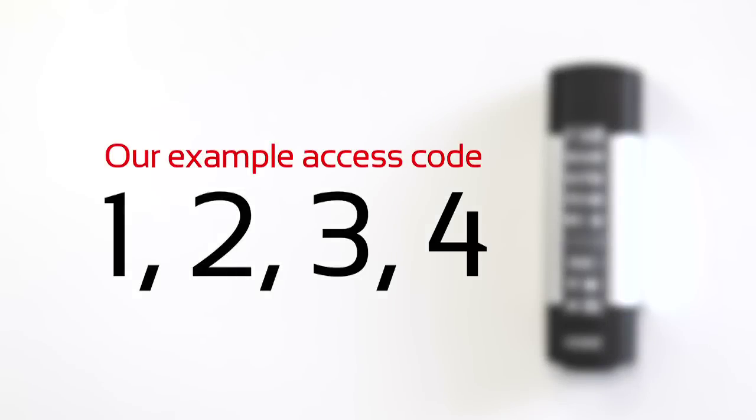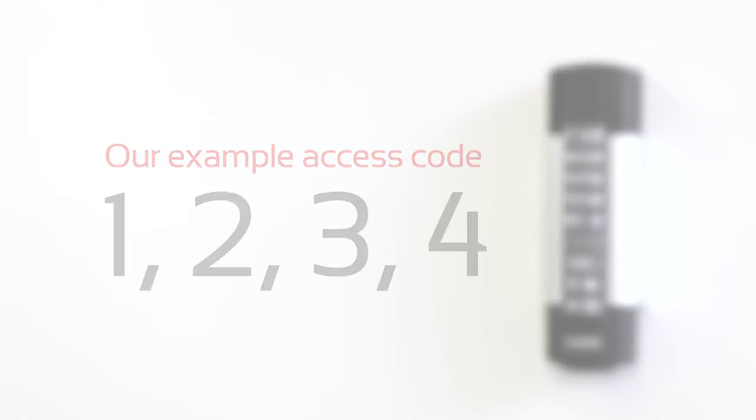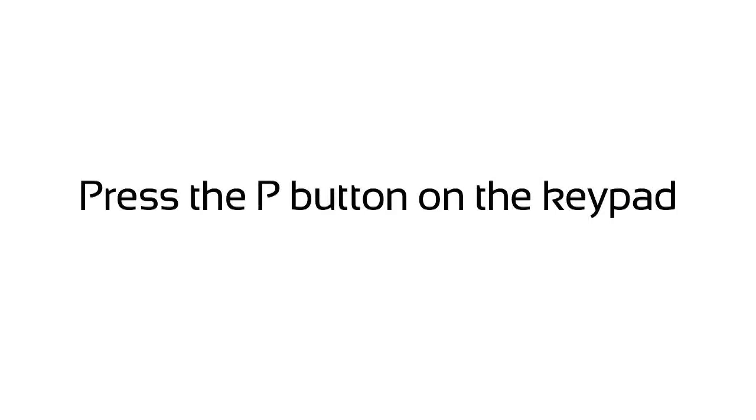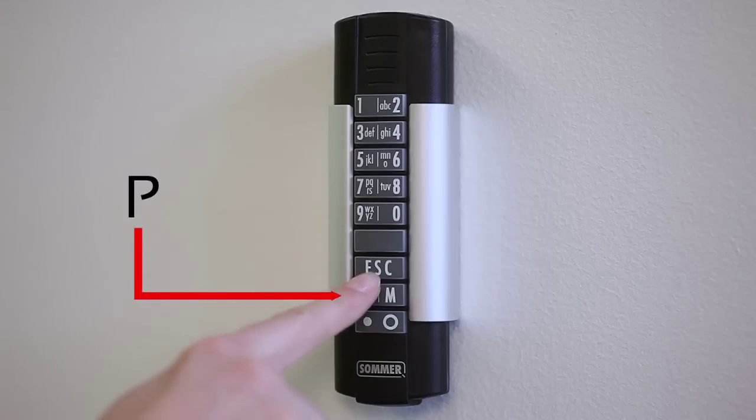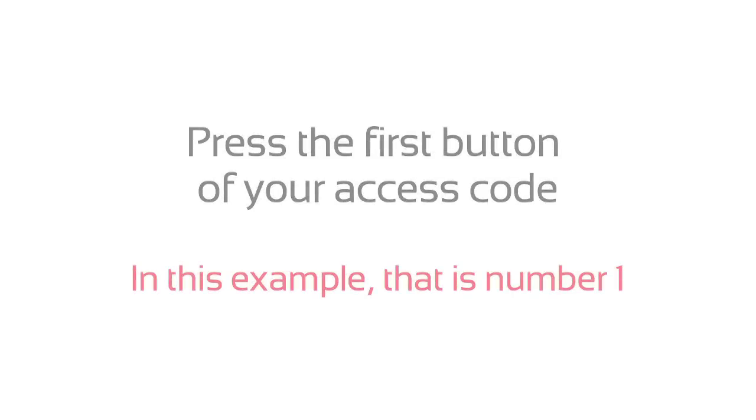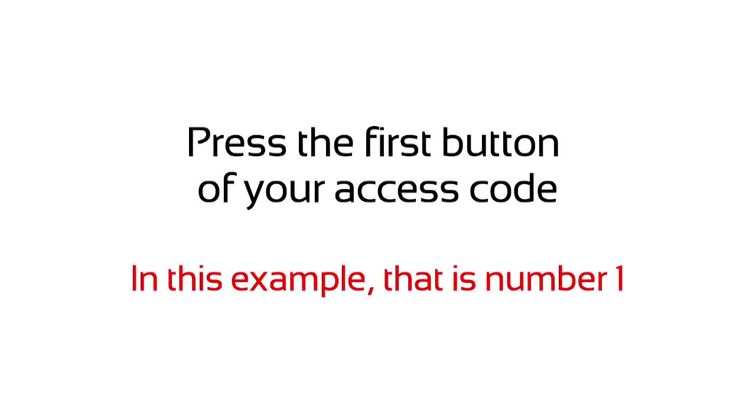For programming an access code, we will use the example 1, 2, 3, and 4. Press the P button on the keypad. Press the first button of your access code. In this example, that is number 1.